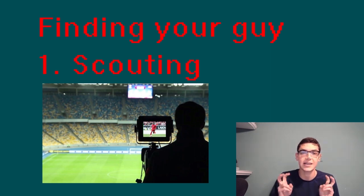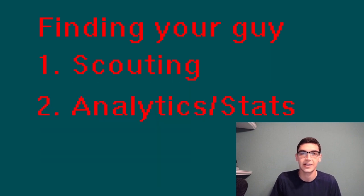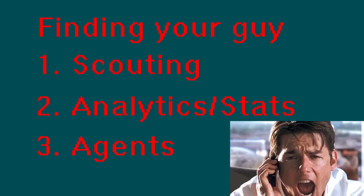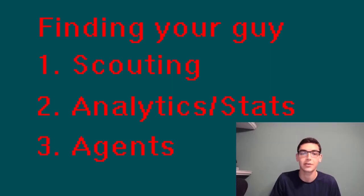Players that pass the eye test — they look good on film and during the game — are also evaluated based on their statistics and underlying analytics. Some players that may look good just don't produce great statistics. Finally, teams can also learn about certain players through their agents. Agents can contact teams to say that their player wants to play for a new team, or that their player would make a good fit. Agents, scouting, and analytics are the main ways that players are evaluated for transfers.